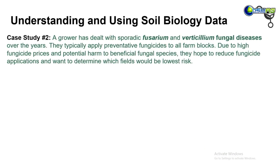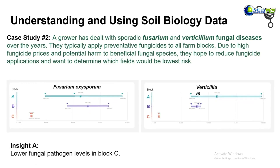In this next case study, the focus shifts to disease. The grower dealt with sporadic Fusarium and Verticillium diseases over the years and typically put out preventative fungicide across all their blocks. Due to high fungicide prices and wanting to reduce potential harm to beneficial fungi, they hoped to reduce fungicide applications. Their goal was to determine which fields would be lowest risk. They sampled three blocks — A, B, and C — and Fusarium was fairly widespread across A and B but at fairly low levels in block C. Verticillium showed the same story: higher in A and B, and only appearing in one of three samples in block C.